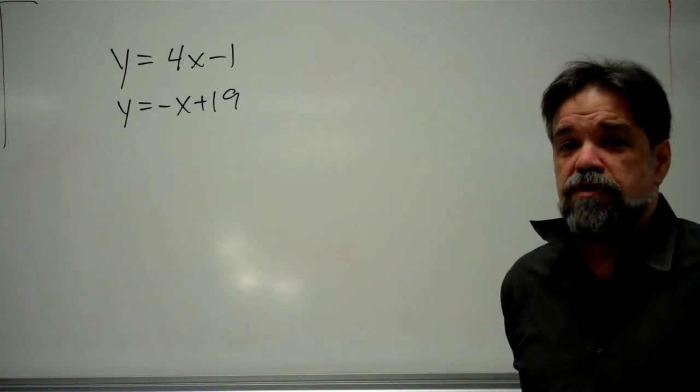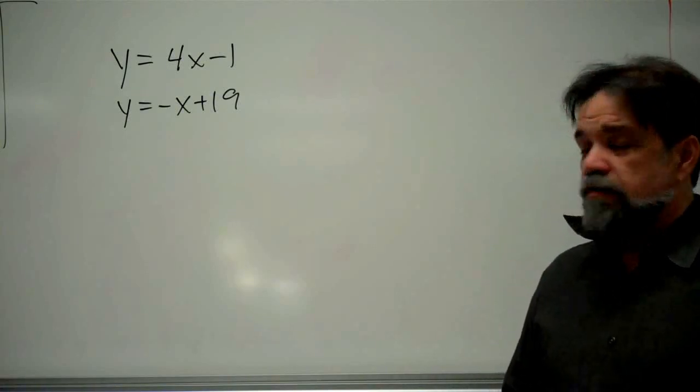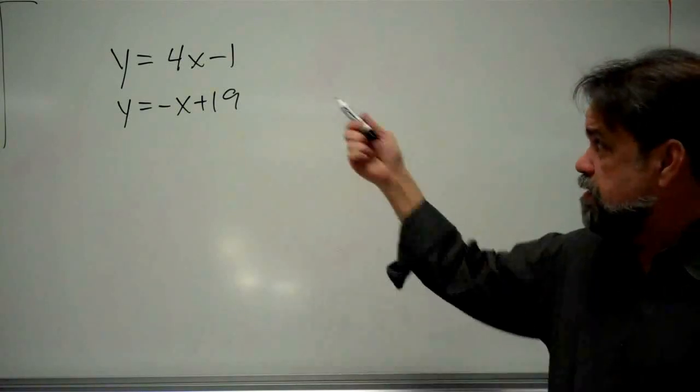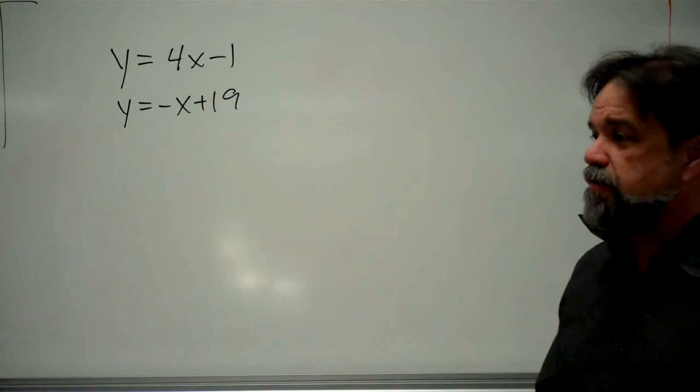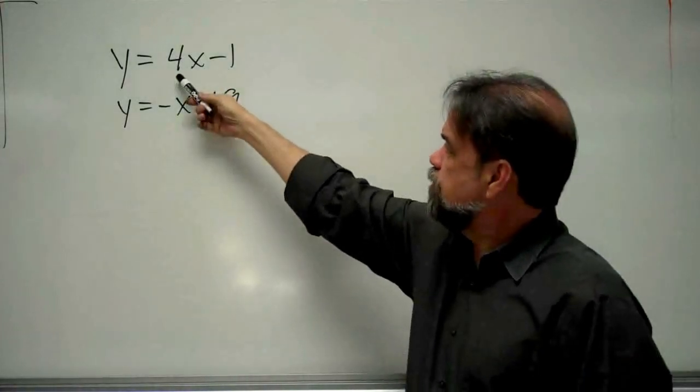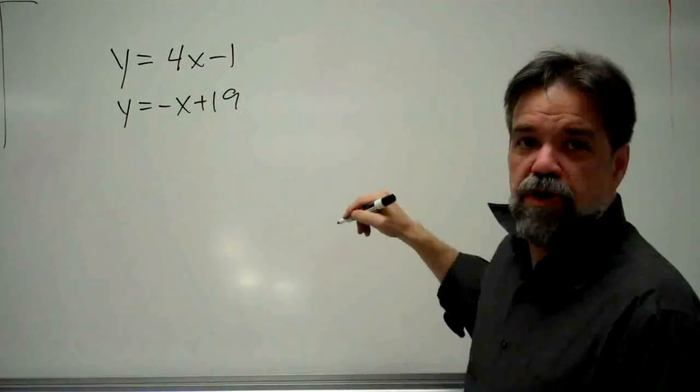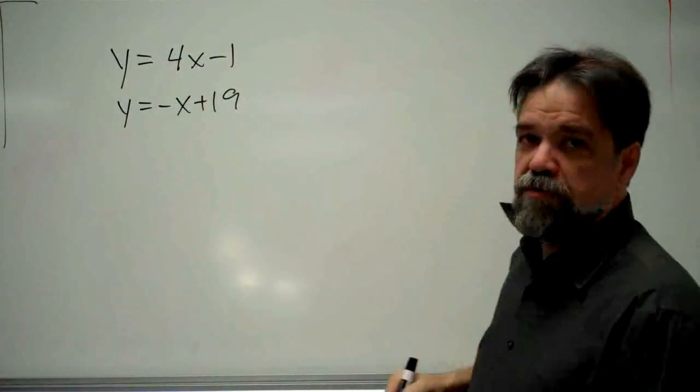In this video, we're going to find the intersection point of two lines, and we're going to do it without graphing the lines. One way to do this to get the intersection would be simply to graph the lines. You'd plot a graph, and the slope of this line is 4, the y-intercept is negative 1, and then you'd do the slope and y-intercept of the other one and figure out what the intersection point is.